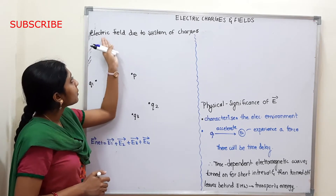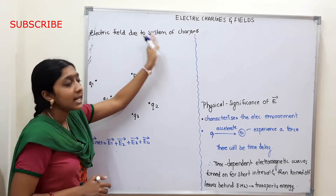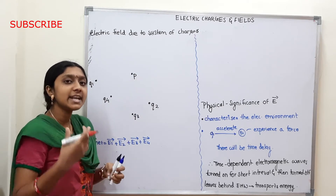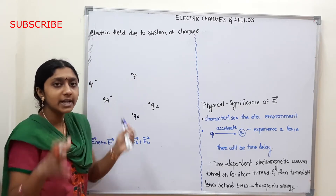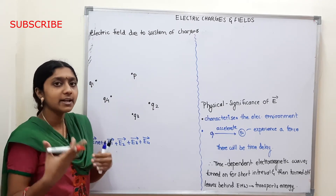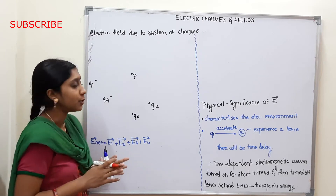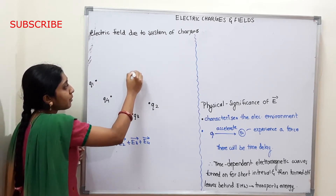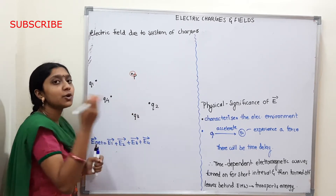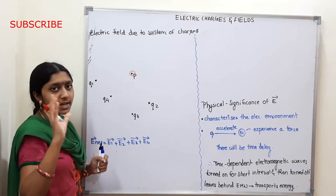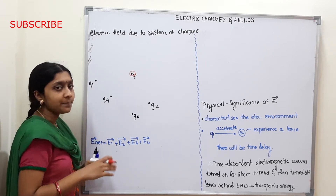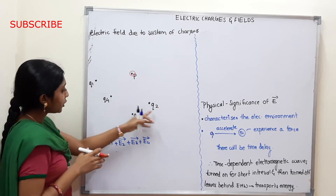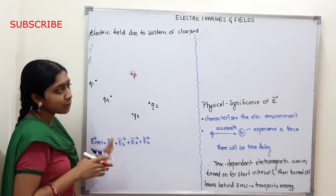So, we are going to see the electric field due to a system of charges and calculate the total electric field. We have four charges: Q1, Q2, Q3, and Q4.